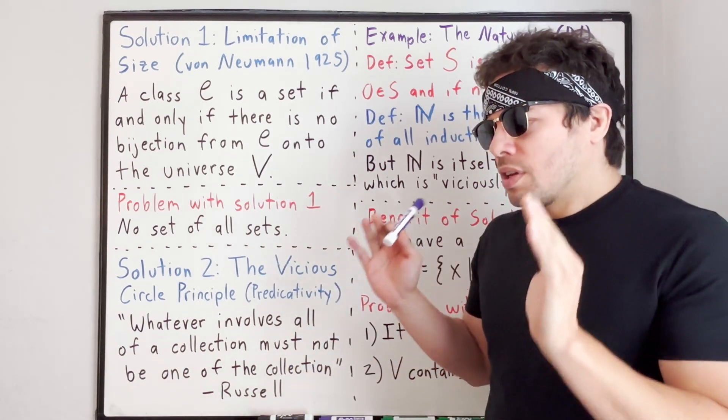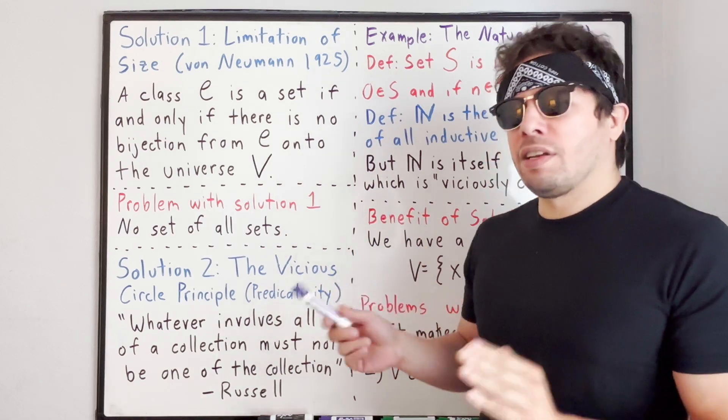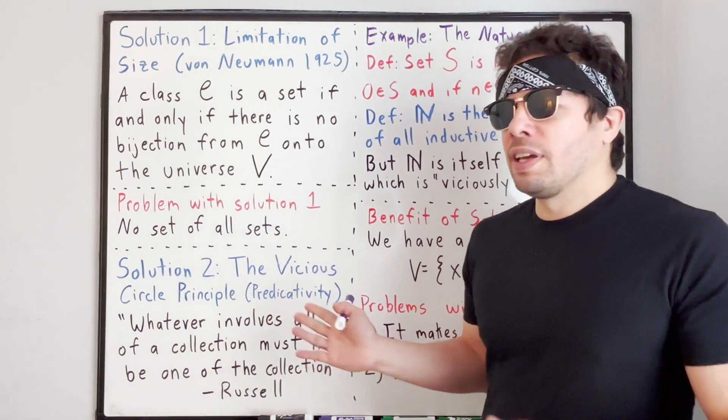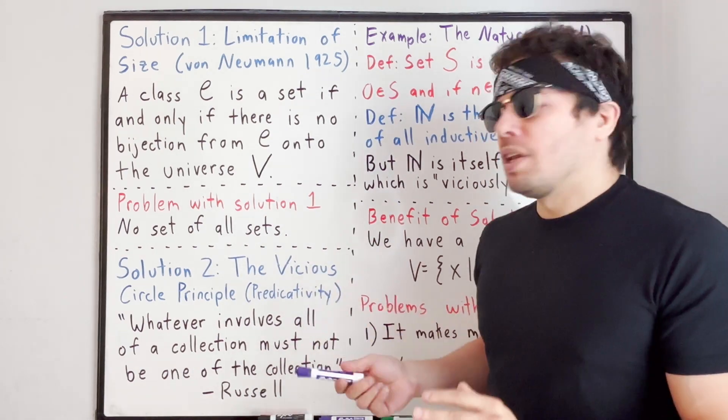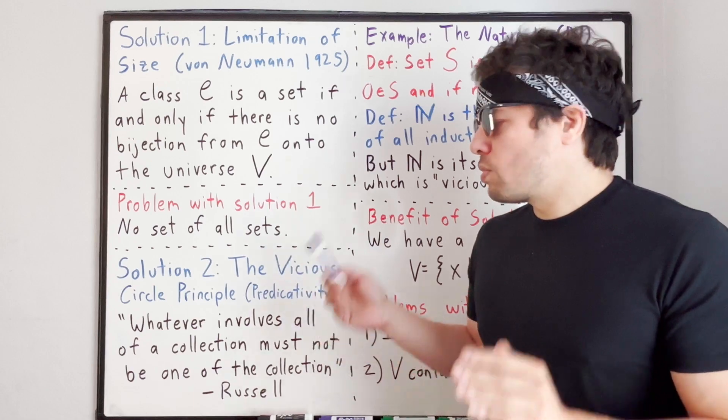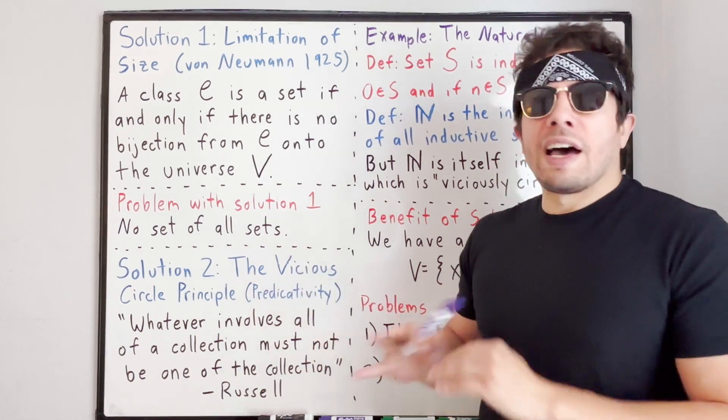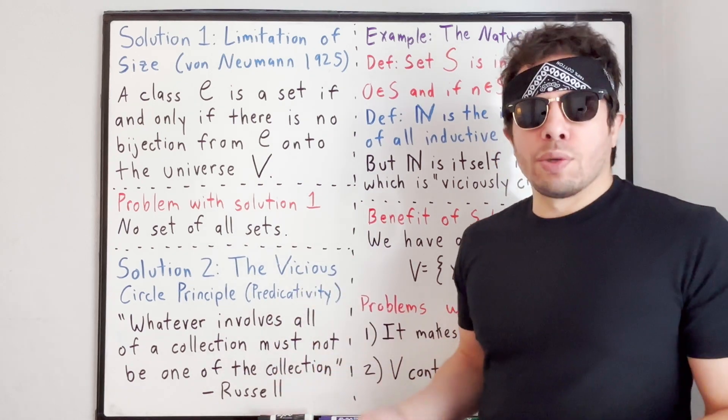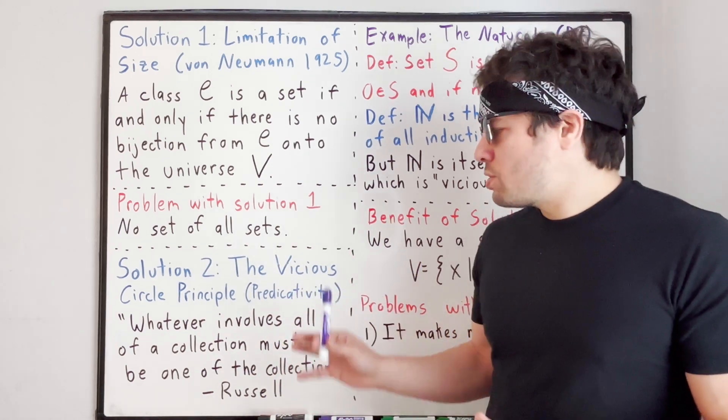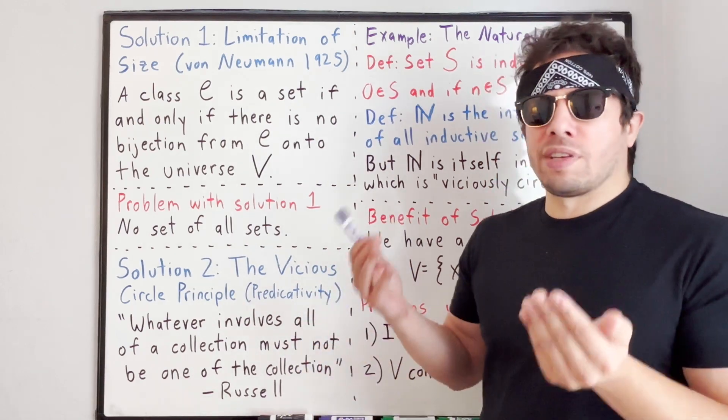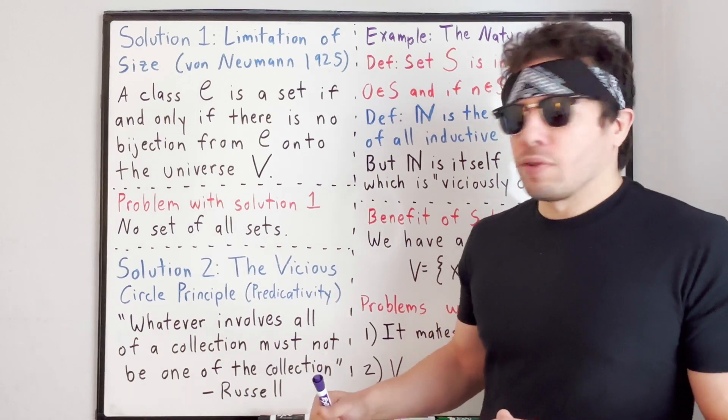The theory of ramified types was Russell's original solution to Russell's paradox, but it wasn't strictly predicative. It didn't adhere strictly to the vicious circle principle. He had this axiom of reducibility. It led to problems. But in Russell's original system, in his theory of ramified types, you did not have a set of all sets, but you also avoided Russell's paradox. However, there are ways to strictly adhere to predicative mathematics, where you do have a set of all sets, and you avoid Russell's paradox.